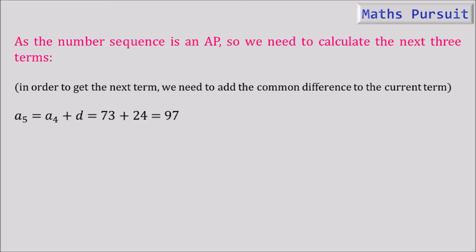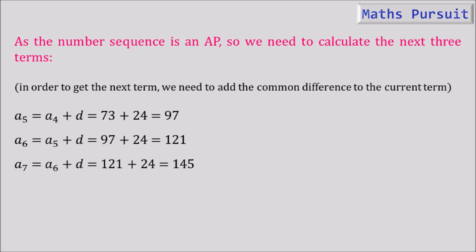A5 = A4 + D = 73 + 24 = 97. A6 = A5 + D = 97 + 24 = 121. A7 = A6 + D = 121 + 24 = 145. Therefore, the next three terms are 97, 121, and 145.